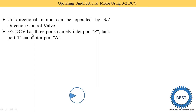A 3 by 2 DCV has three ports. The first digit in any directional control valve indicates the number of ports, and the second digit — 2 — indicates that two positions are possible. The three ports are: the inlet port denoted as P, the tank port denoted as T, and the motor port A. In this case we use a motor, so we call it motor port.